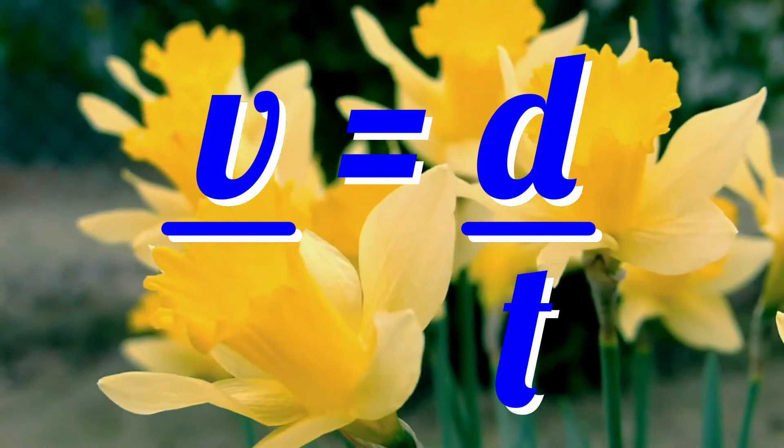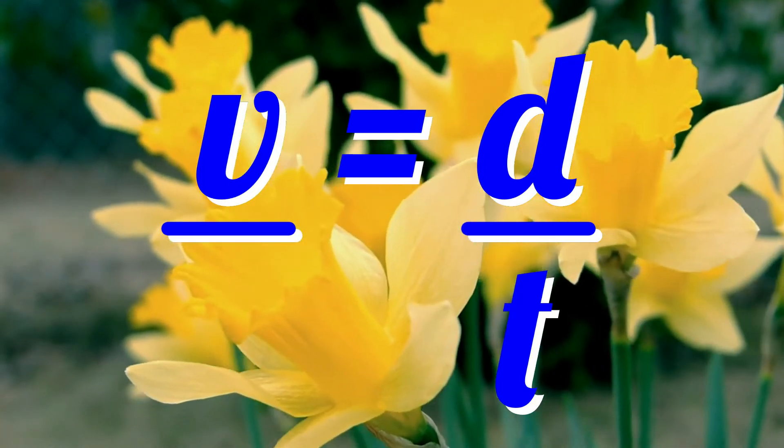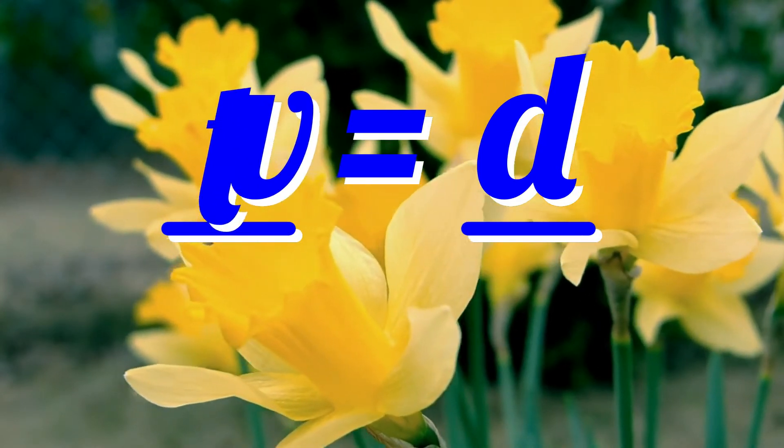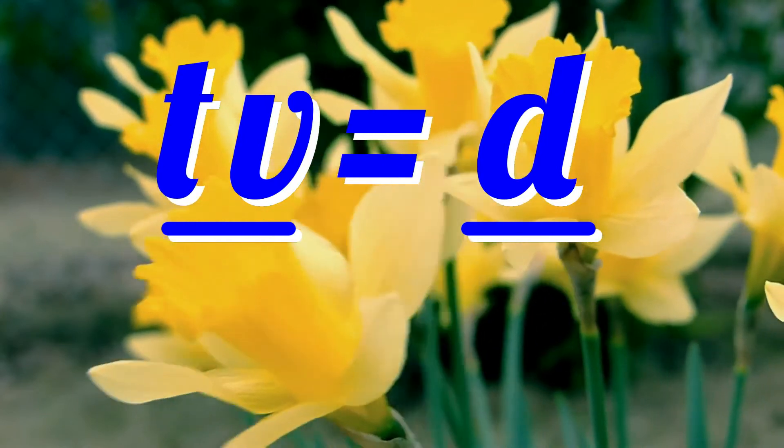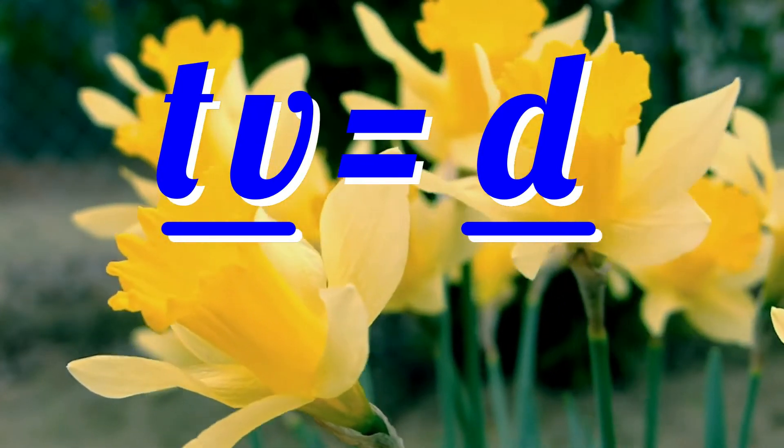To make distance the subject of the equation, if you know the time and velocity, multiply through by time. That is, move the T up next to the V: TV equals D. Time multiplied by velocity equals distance.